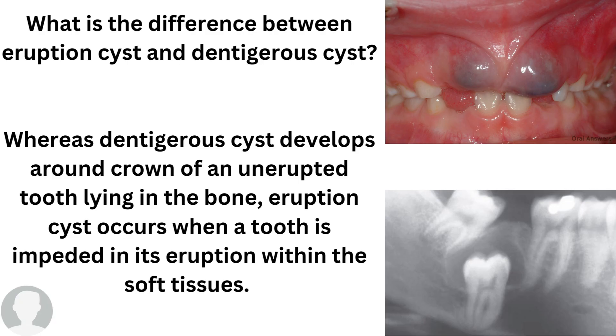Once the contents are drained, within a few days the tooth will erupt normally. Now, did you know that the eruption cyst and the dentigerous cyst are synonyms of each other? The difference is that the dentigerous cyst develops around the crown of an unerupted tooth lying inside the bone.